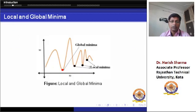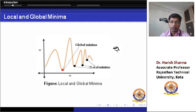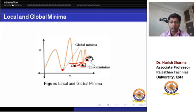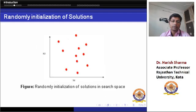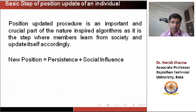This graph represents the global minima and local minima of the optimization problem. Here one is the global minima and the other three are local minima. As discussed, one of the drawbacks of probabilistic methods is that the methods may get stuck in local minima, and the group of individuals or the population may stop moving towards the global optimal.